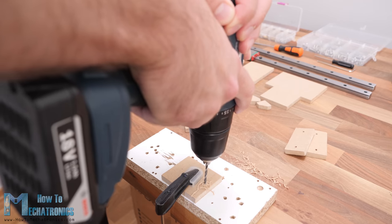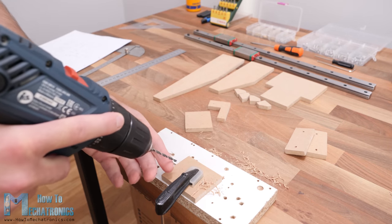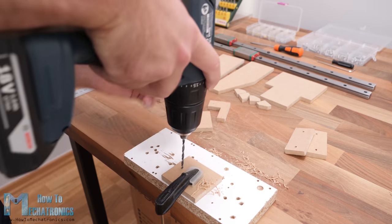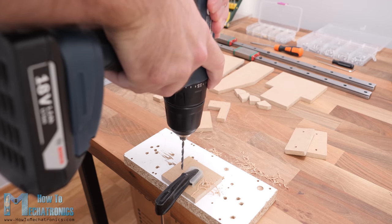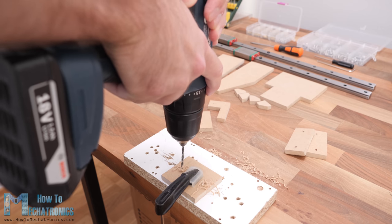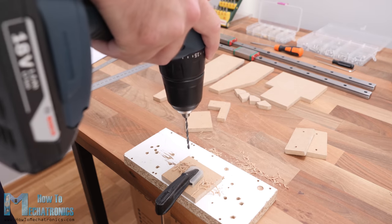Making the holes precisely is actually more important than cutting the pieces. The hole positions must be very precise, as they have to fit with the other parts which have precise and fixed dimensions, like the linear rails and the stepper motors.